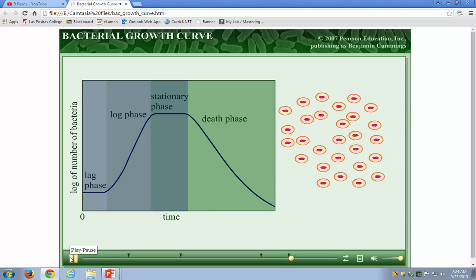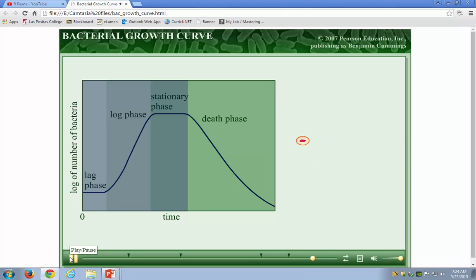After the bacteria have depleted most of their nutrients and their waste buildup is getting too great, the bacteria begin to die in larger numbers than are made. If the death phase has carried on for a long time, most of the cells will die. If a cell is to survive, it must switch its metabolism back to a dormant state, because there are not enough nutrients available for any more growth.